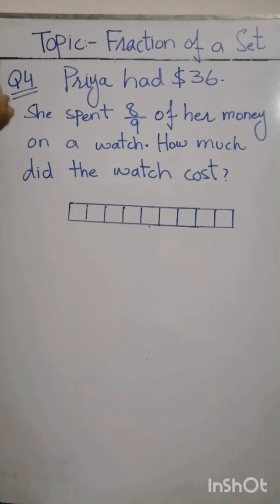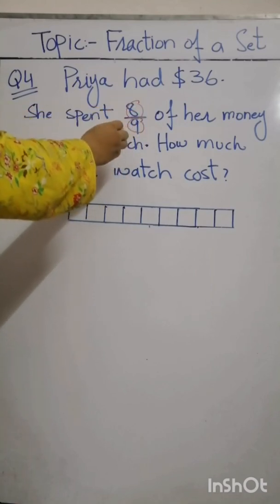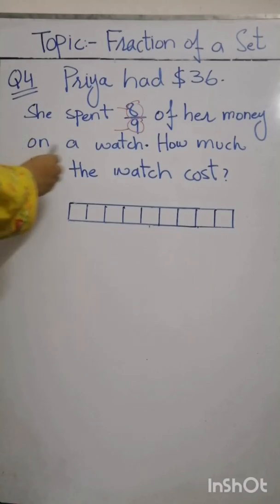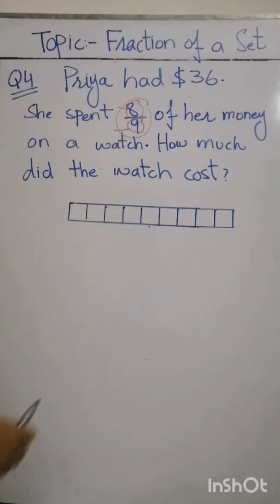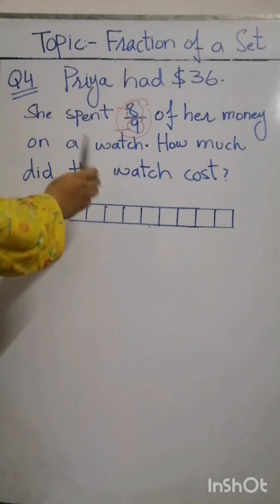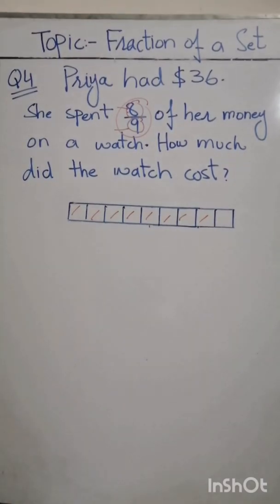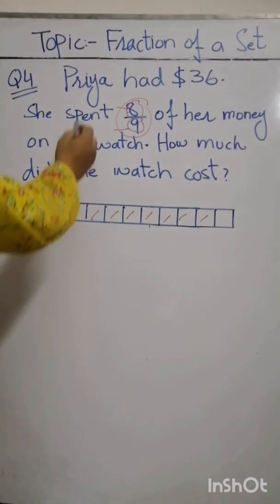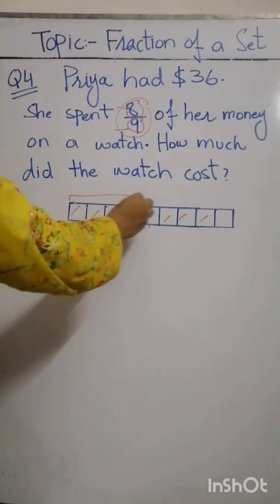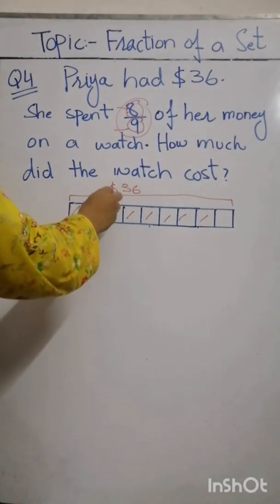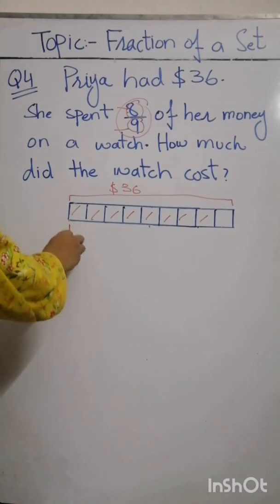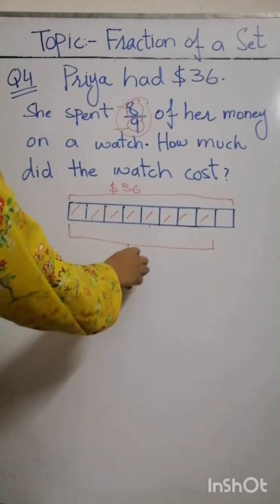Now students, we have a question from the textbook, page eighty-eight, question number four. Priya had dollar thirty-six. She spent eight by nine of her money on a watch. Eight by nine means nine is the whole and eight is the part. Looking at the diagram, she spent eight parts out of nine on the watch — one, two, three, four, five, six, seven, eight parts spent on a watch.